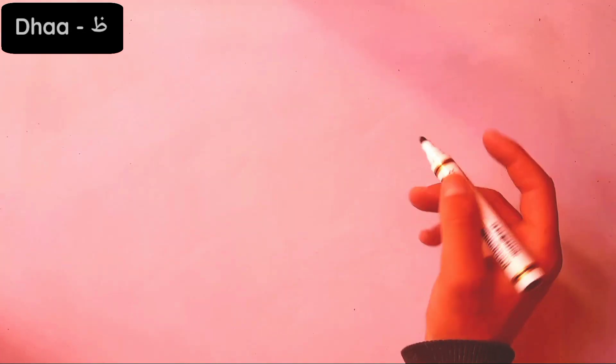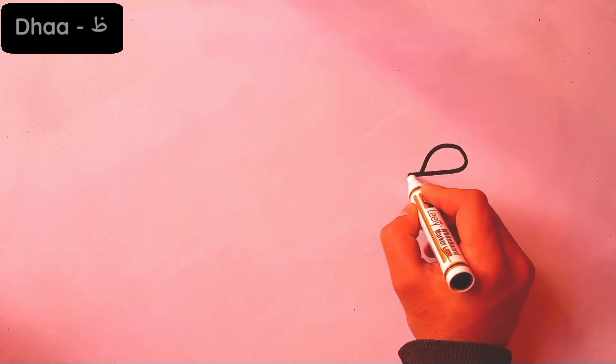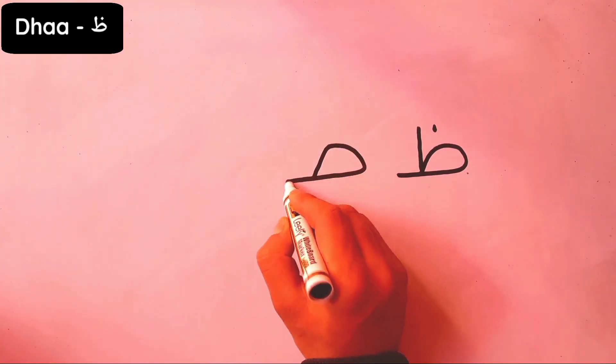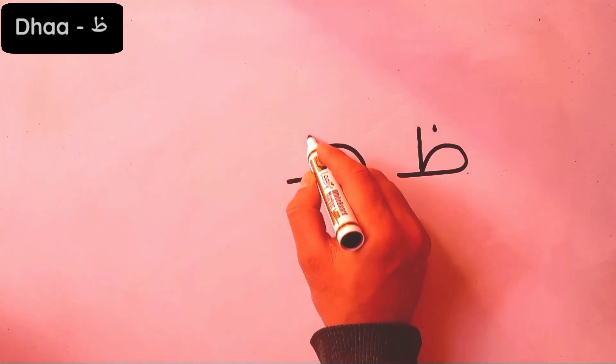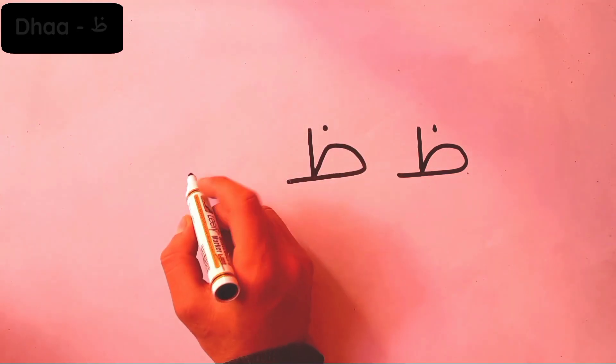Hello again, marhaban mujadadan. In this video we will learn the letter VAA. As you can see, it has the same shape as TAA — the only difference is the dot on the top of the letter.